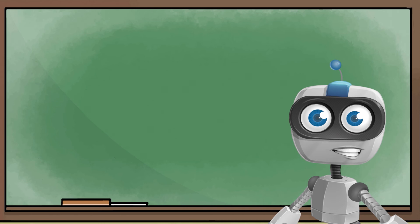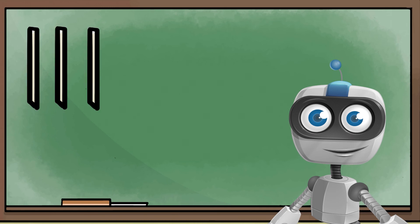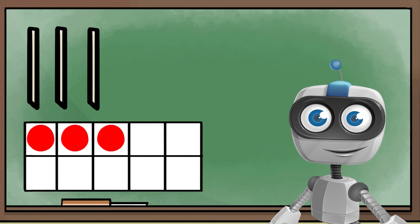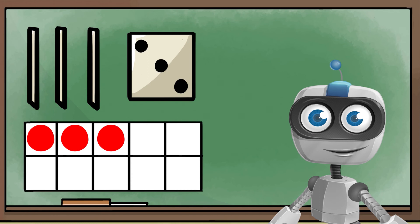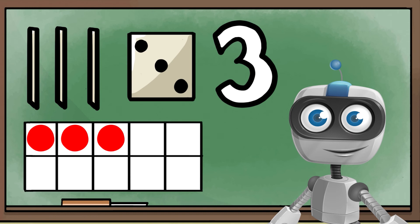I have four different ways to show this number. Can you tell what number I'm drawing? Tallies, ten-frame, dice, numeral. Three. All these pictures are different ways to show three.